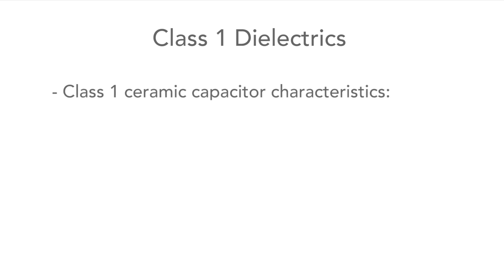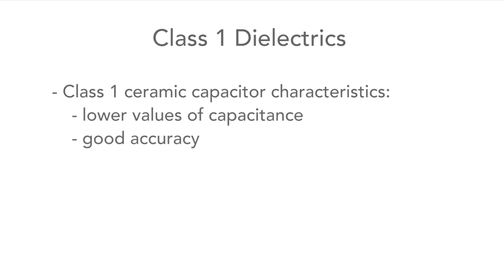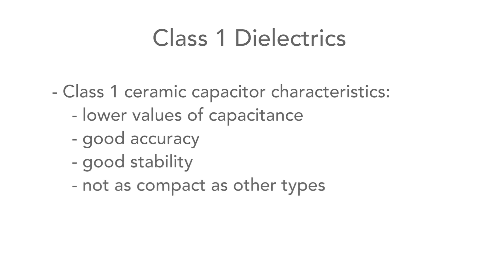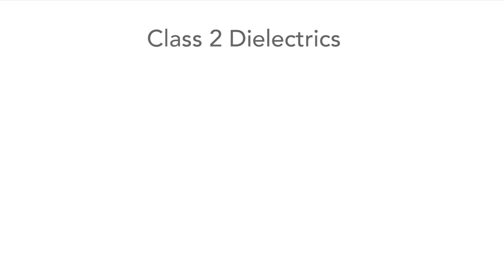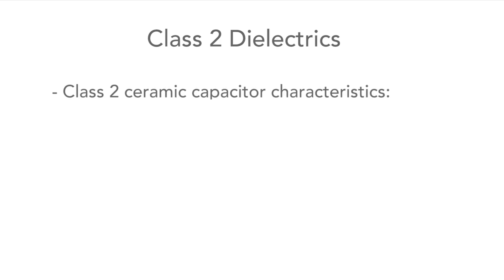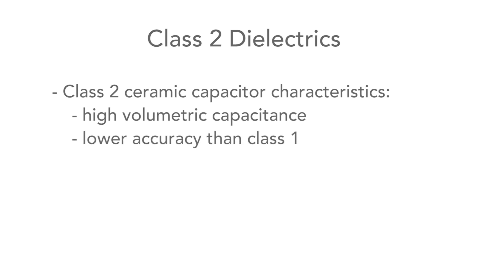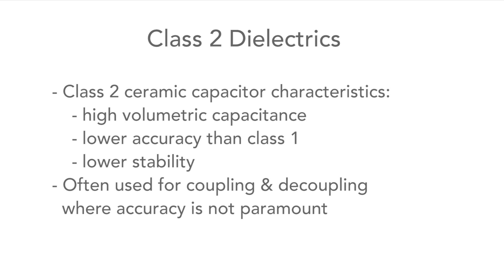The class 1 capacitors tend to be used for much lower value levels of capacitance, having accuracy and stability rather than compactness as their main feature. Now let's turn to the class 2 ceramics, as the designations for these dielectrics follow a different system. Class 2 capacitors provide a much higher level of volumetric capacitance — in other words they have a large capacitance for a particular volume — but this is at the expense of accuracy and stability. These capacitors tend to be used for coupling and decoupling in circuits as well as a variety of other things where accuracy is not paramount.